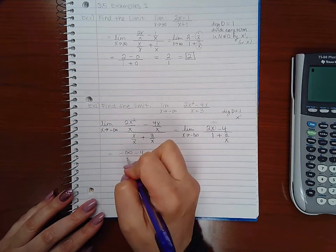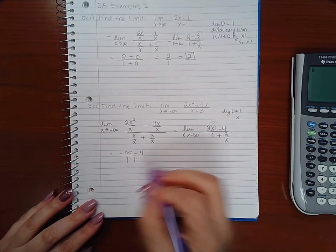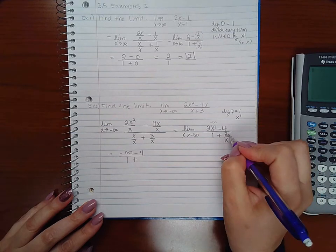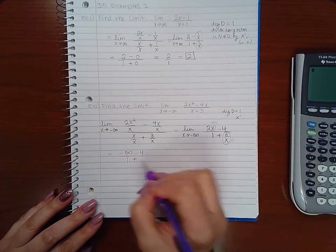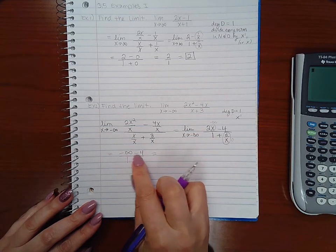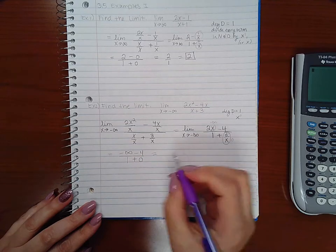The limit of 1 is 1, and the limit of 3 over x, well that's a constant over x, will go to 0. So you end up with... well, negative infinity plus or minus any real number is still going to be negative infinity.